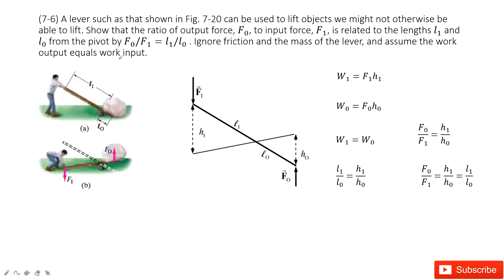Basically, for these cases, it tells us we assume the work output equals the work input. What does that mean? It means we find the output force F0 (this one) and also the input force F1 (this one).